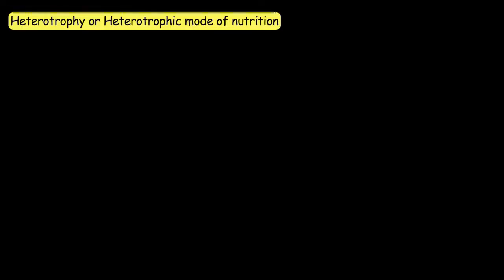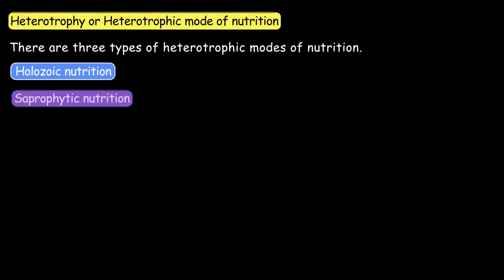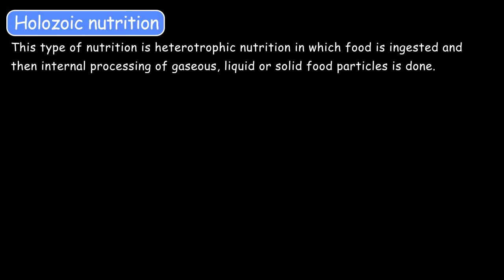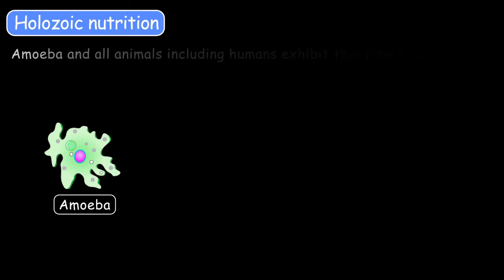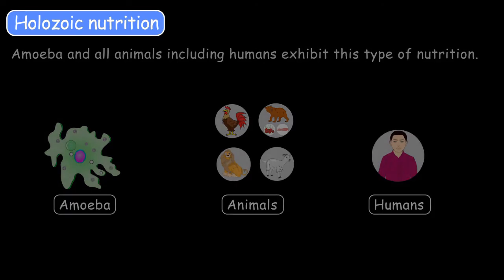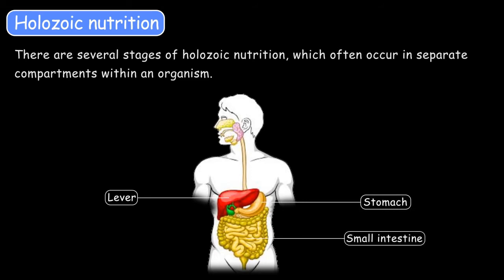Now let's learn about heterotrophic modes of nutrition. There are three types of heterotrophic modes of nutrition. Let's first learn about holozoic nutrition. This type of nutrition is heterotrophic nutrition in which food is ingested and then the internal processing of gaseous, liquid, or solid food particles occurs. Amoebas and all types of animals, including humans, exhibit this type of nutrition. There are several stages of holozoic nutrition, which often occur in separate compartments within an organism, such as the liver, stomach, small intestine, and large intestine.